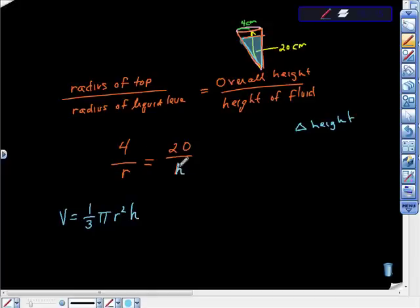So I'm going to cross multiply here. I'm going to get 4h is equal to 20r. And that r, I'm going to divide both sides and get that r is equal to h/5. It's equal to h/5, and that's just a tiny bit of algebra there. So you can check that math.